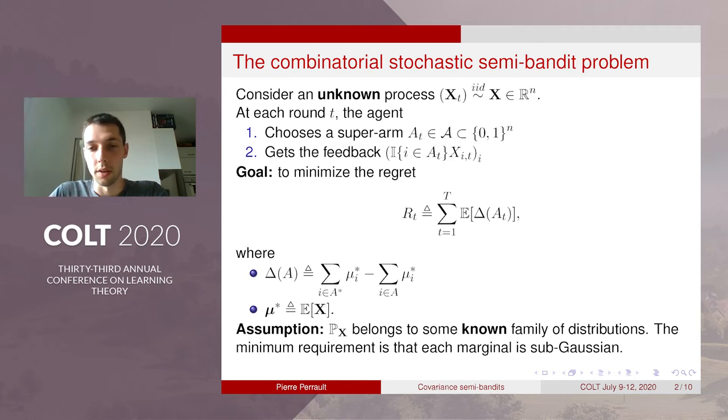So here the unknown parameter mu star is the expectation of the random vector and this problem has many variants depending on the assumption you have on this random process of outcomes.